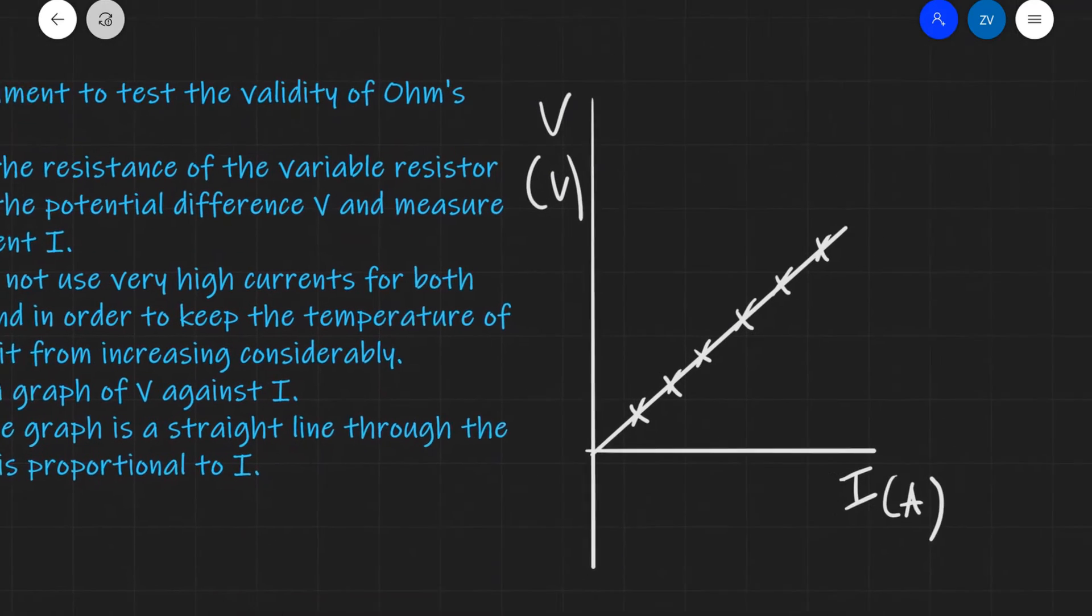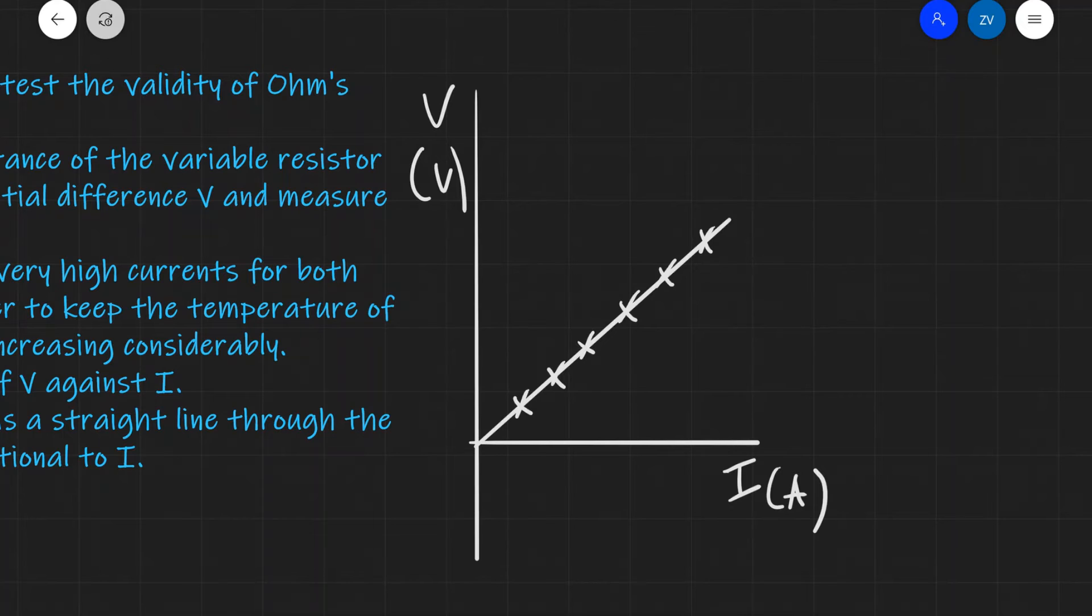Let me just show you the Y equals MX plus C analysis. So in this case, if I have the following graph, we can compare this with the equation of a straight line. Our equation is V equals IR. Y equals MX plus C is the equation of a straight line that we should know from our GCSEs. I'm just going to add a little plus zero on this end.